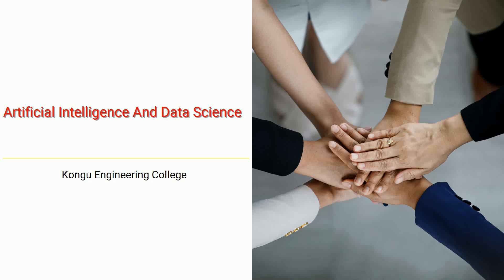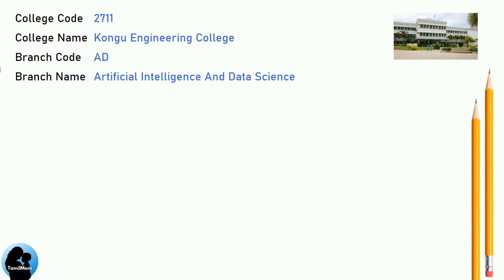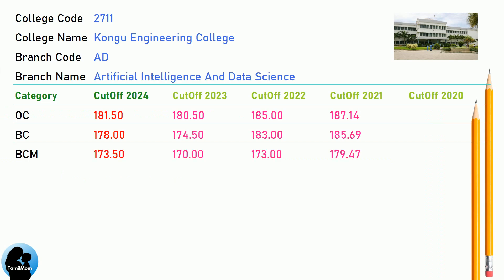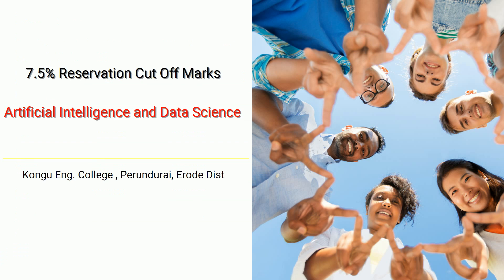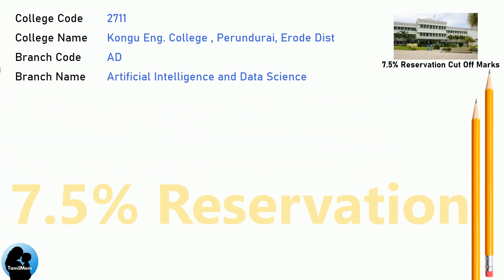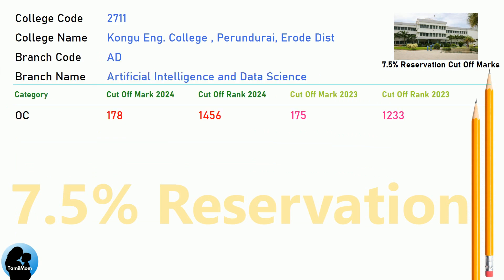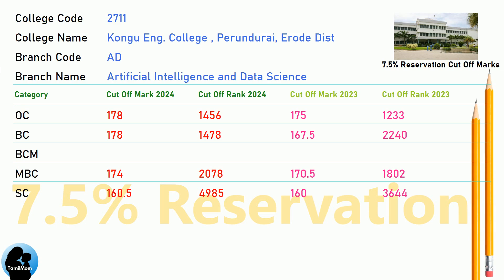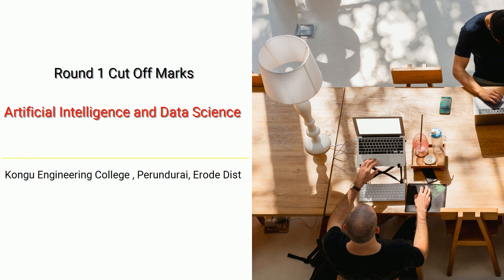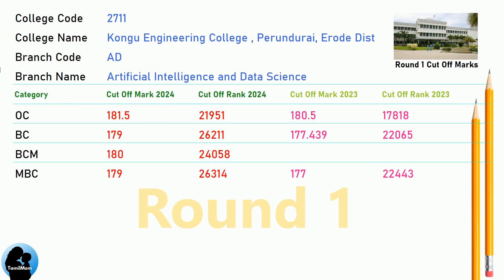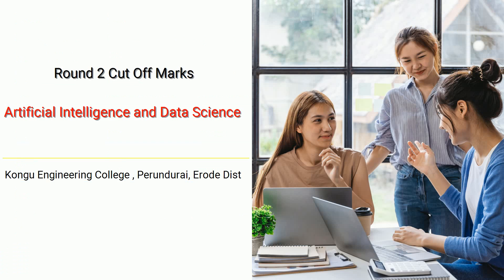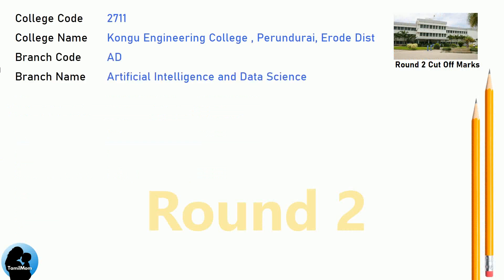DNA cutoff for Kongu Engineering College in Artificial Intelligence and Data Science. DNA 7.5 reservation cutoff for Kongu Engineering College in Artificial Intelligence and Data Science. DNA Round 1 cutoff and Round 2 cutoff for Kongu Engineering College in Artificial Intelligence and Data Science.